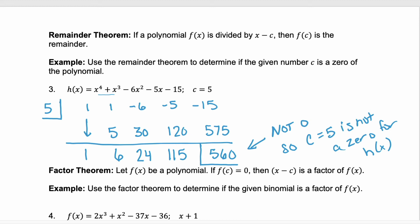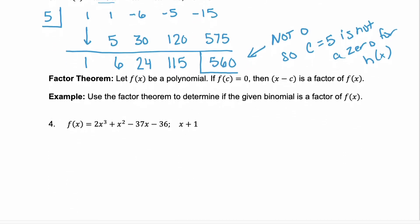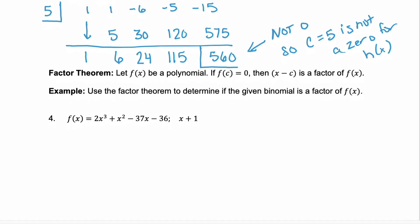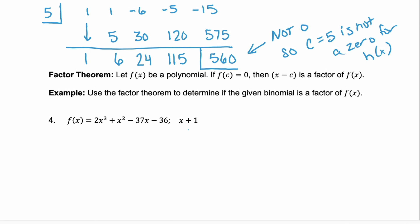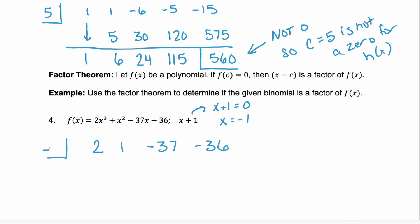Now let's look at the factor theorem, which is saying something very similar to the remainder theorem. It's saying that if f of x is a polynomial and f of c equals 0, then x minus c is a factor of f of x. So we want to know if x plus 1 is a zero of f of x. What we're looking for is x plus 1 being equal to 0, or x equals negative 1. So remember, we're going to divide by negative 1.